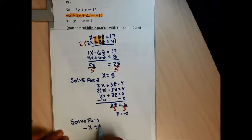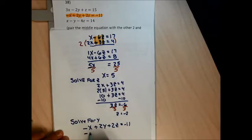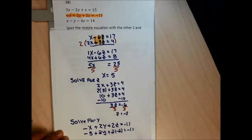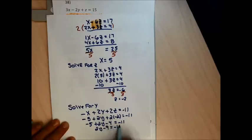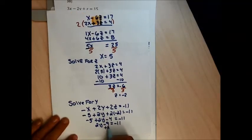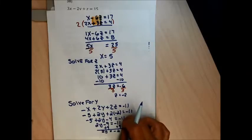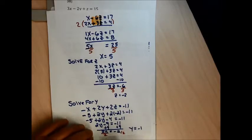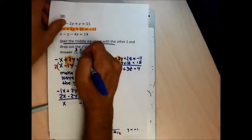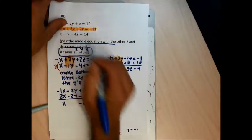I'm going to use the middle equation: negative x plus 2y plus 2z equals negative 11. Plugging in x equals 5 and z equals negative 2: negative 5 plus 2y plus 2 times negative 2 equals negative 11. That gives minus 5 plus 2y minus 4 equals negative 11, so 2y minus 9 equals negative 11. Adding 9 to both sides gives 2y equals negative 2, and dividing by 2 gives y equals negative 1.